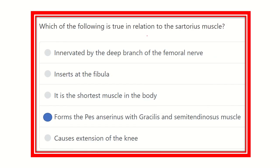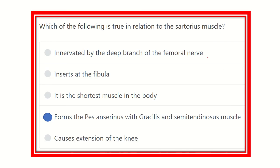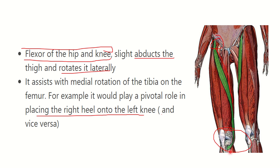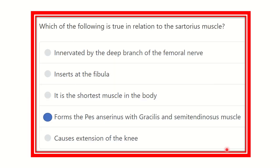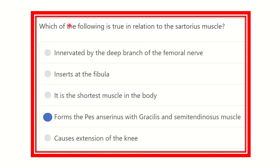Now evaluating each option: 'Innervated by the deep branch of the femoral nerve' is false — it is the most superficial muscle, supplied by the superficial branch. 'Inserted at the fibula' is false — it inserts into the tibia. 'Shortest muscle of the body' is false — it is actually the longest muscle of the body. 'Forms the pes anserinus with gracilis and semitendinosus' is true. 'Causes extension of the knee' is false — it causes flexion of both the hip and knee joint.